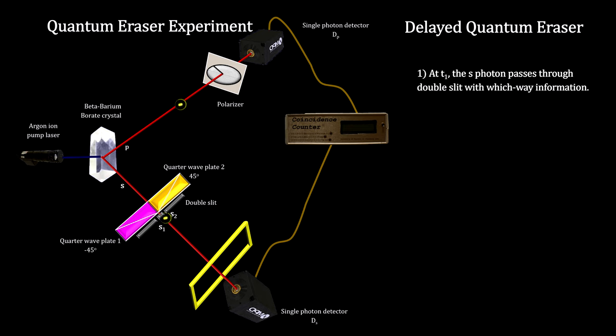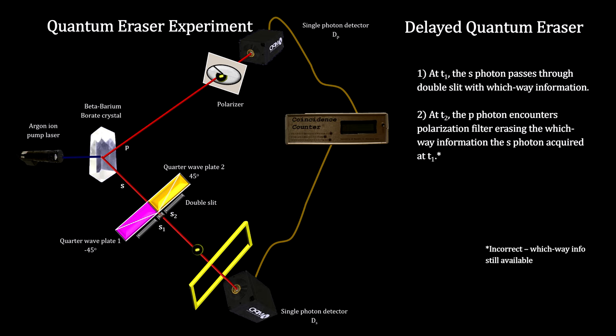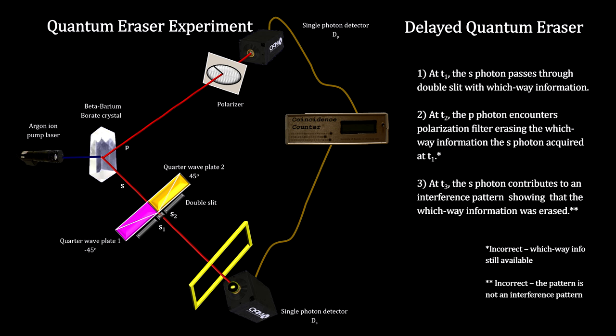Many eraser experiments use beam splitters and adjusted path lengths to turn the blob into fringe and anti-fringe patterns. Either way, I find it very sad that some physicists characterize this experiment as an example of the cause coming after the effect.